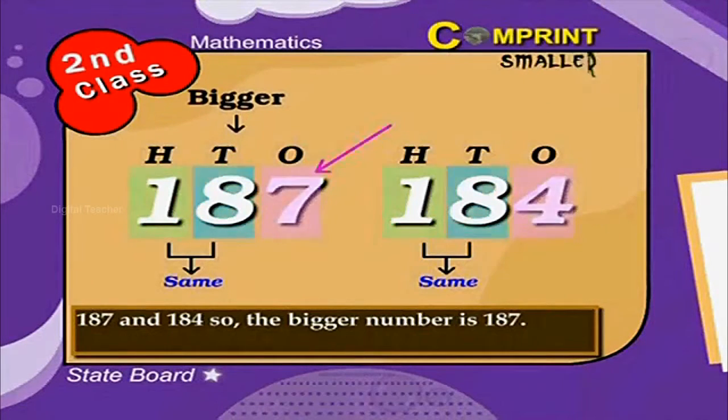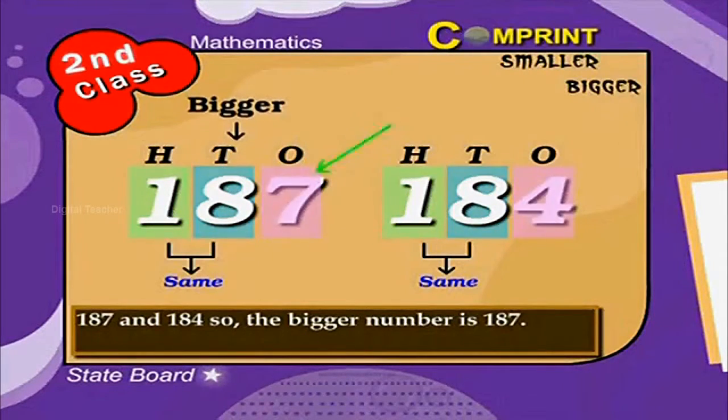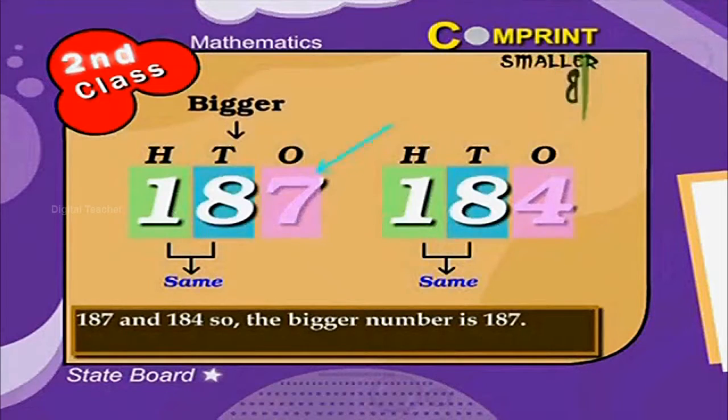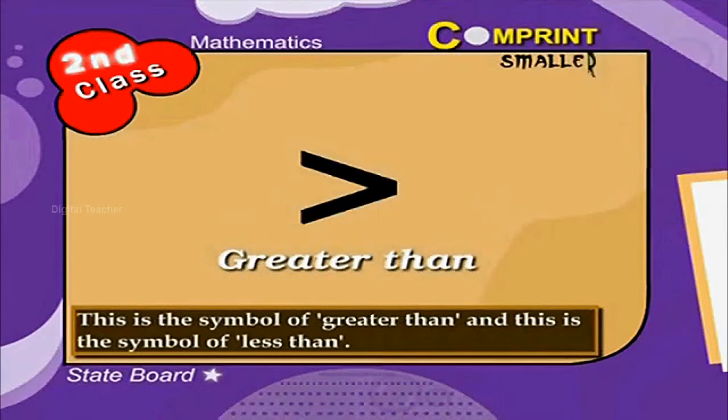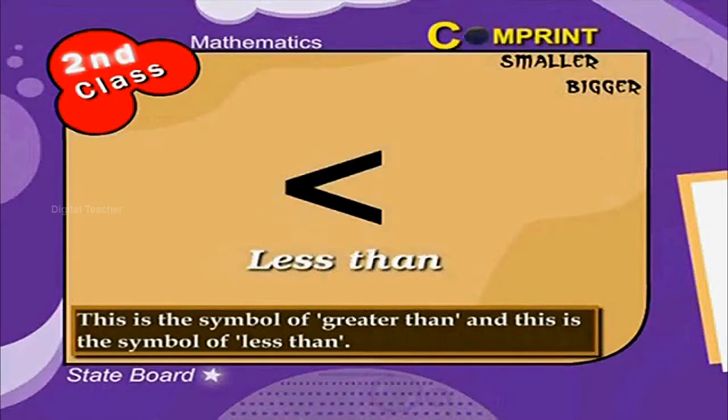So the bigger number is 187. This is the symbol of greater than and this is the symbol of less than.